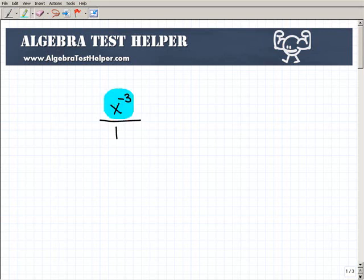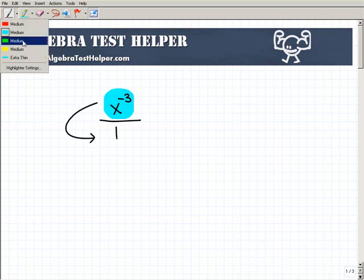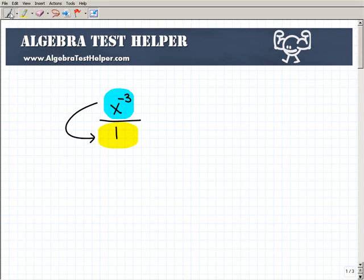Anytime you have a power with a negative exponent, wherever it's at in the fraction, whether it's in the numerator or denominator, if you just pick it up and move it to the other side of the fraction bar, the negative exponent goes away. It's as simple as that.